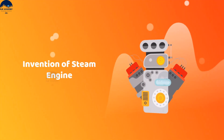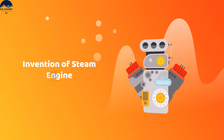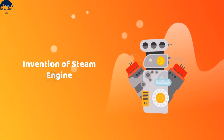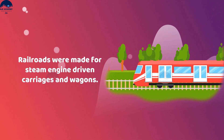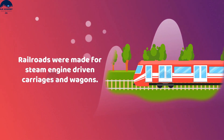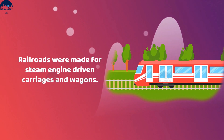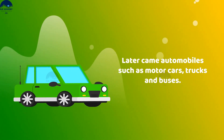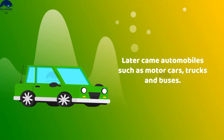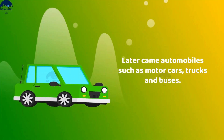The invention of the steam engine led to the development of new means of transport. Railroads were made from steam engine-driven carriages and wagons. Later came automobiles such as motor cars, trucks, and buses.